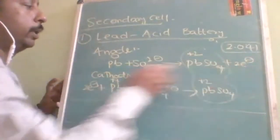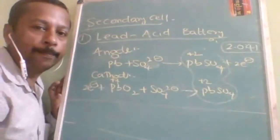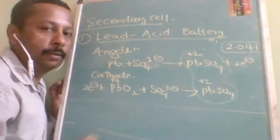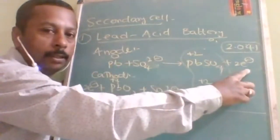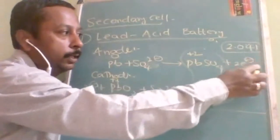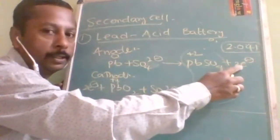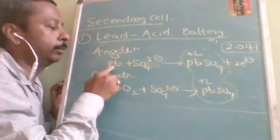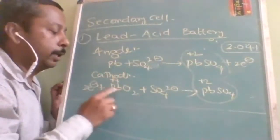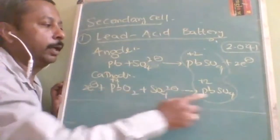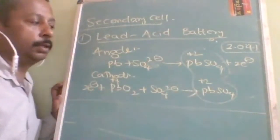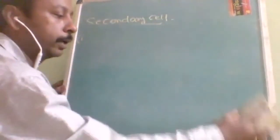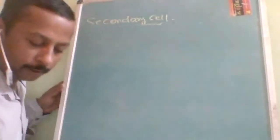During discharge the reactions proceed as described; during charging, the reactions reverse — electrical energy from commercial supply provides electrons, converting PbSO4 back to Pb at the anode and to PbO2 at the cathode. Whatever reaction takes place during charging is exactly opposite to discharging.